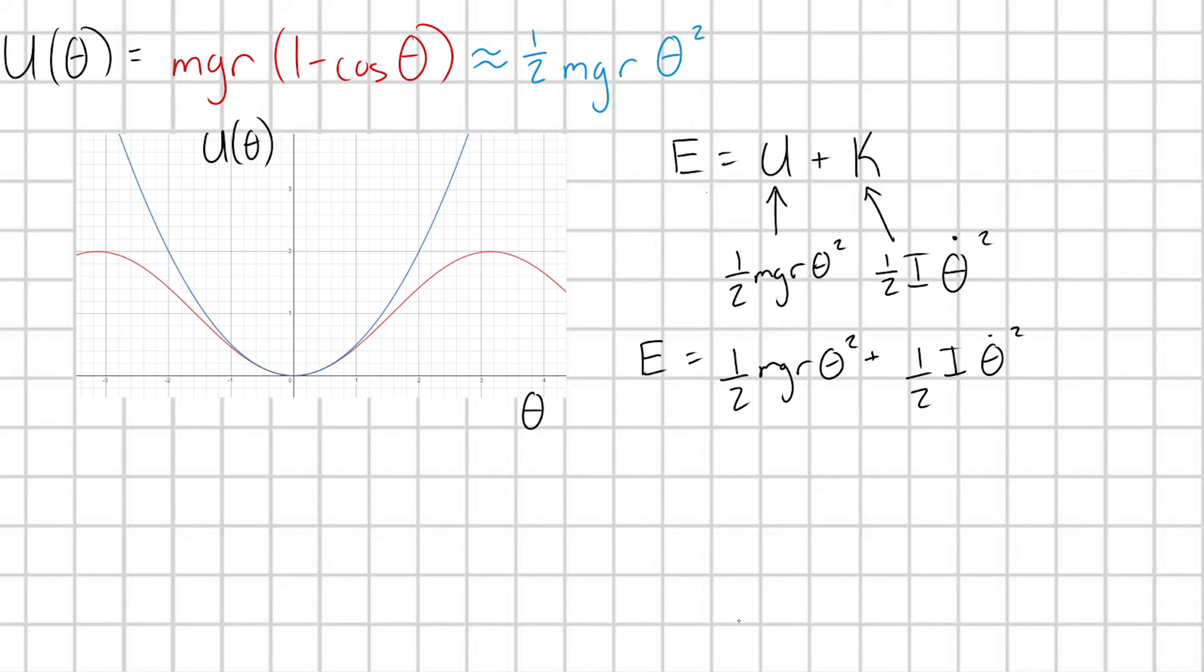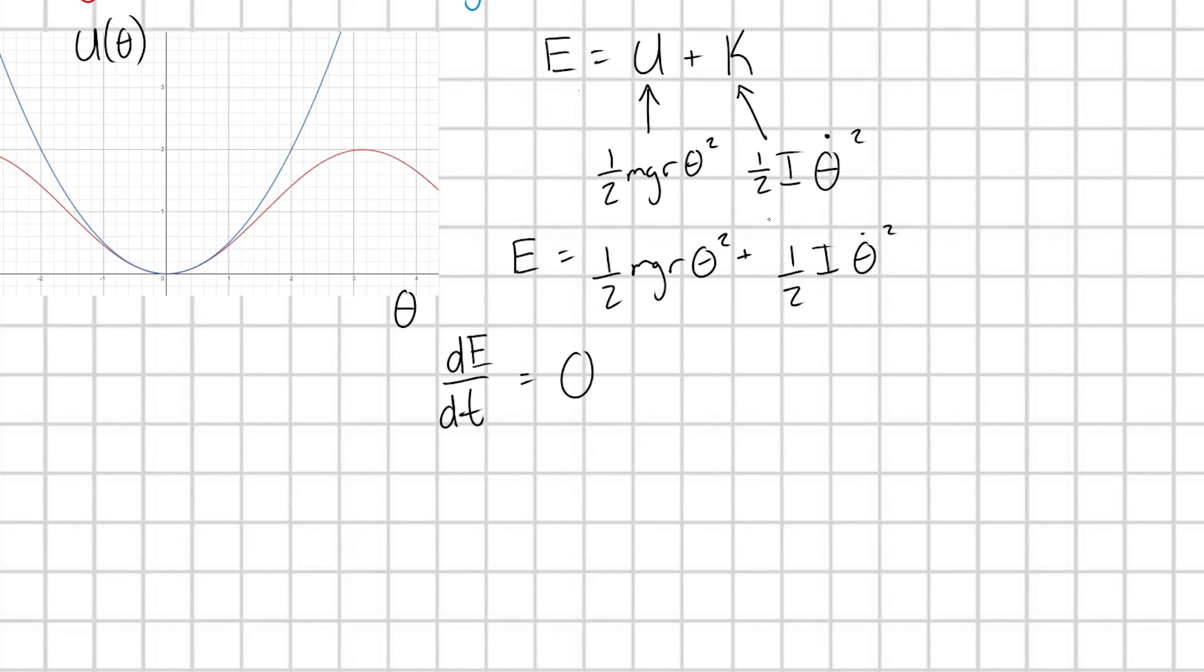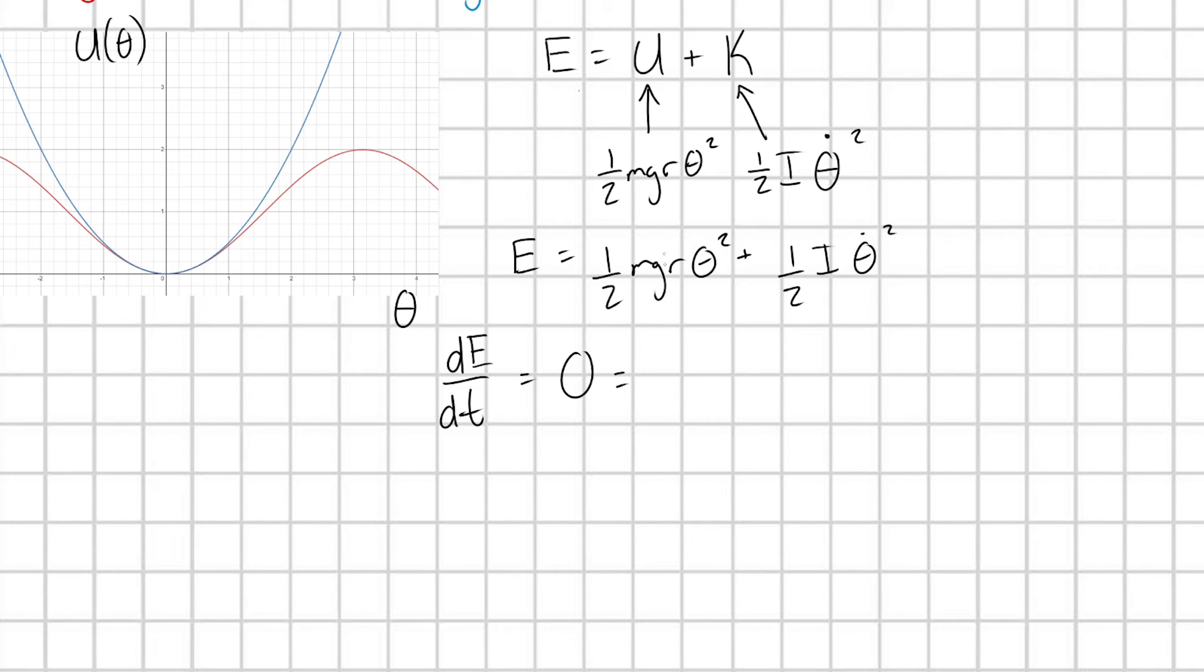We can extract out an equation of motion using this energy super easily. All that we need to do is take the time derivative of my energy, dE dt. Because E is just a constant, this derivative is just going to be zero. And now I just have to take the derivative of the right side of my equation here. So I'm going to start. I'm going to pull out these constants here. I have one-half mgr, and I need to take the time derivative of this theta. And that's going to give me, apply the chain rule, 2 times theta times theta dot.